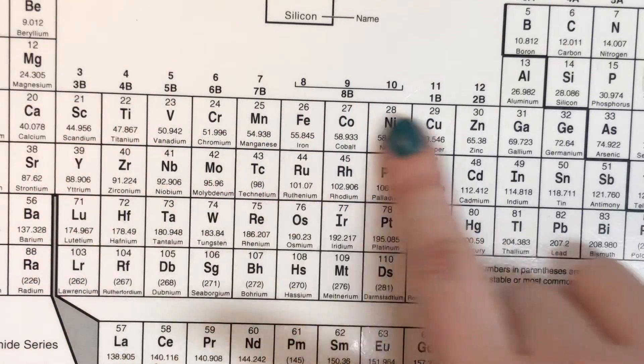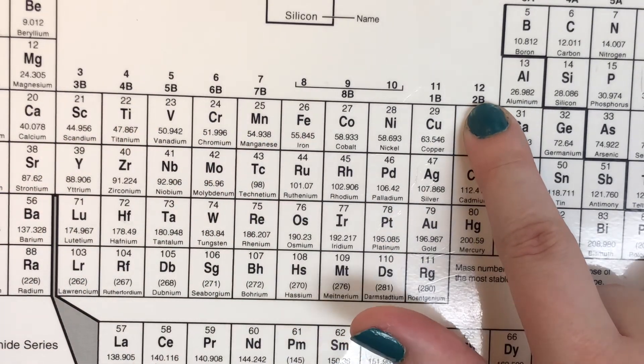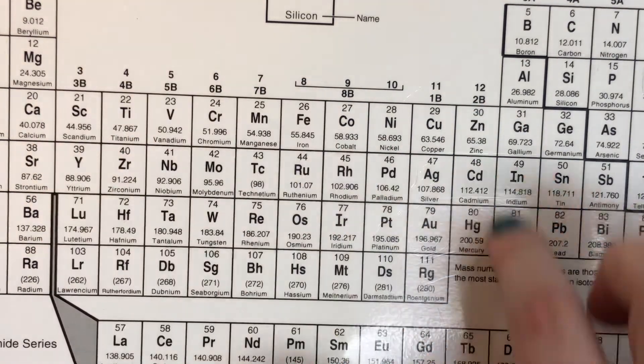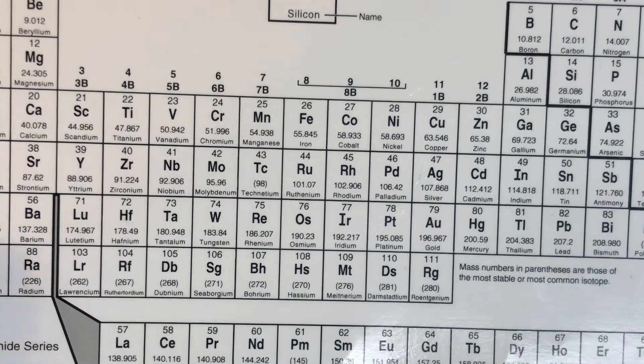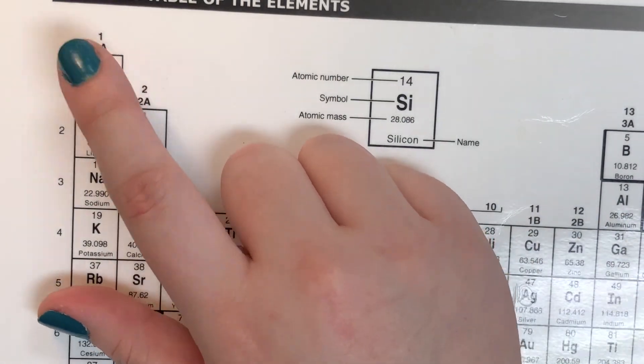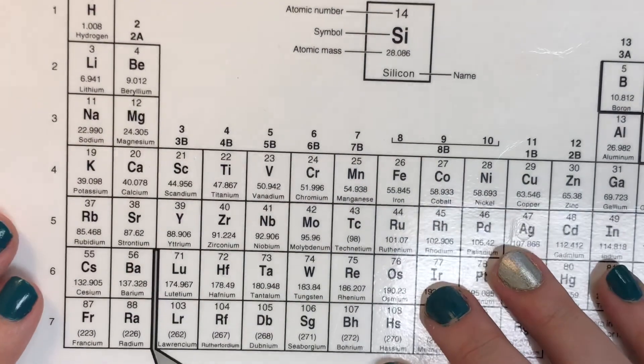The columns that have B next to their number do not follow this pattern. This will be special, and we'll talk about that at a later date. But the columns that have an A next to their number, that is going to be their number of valence electrons.